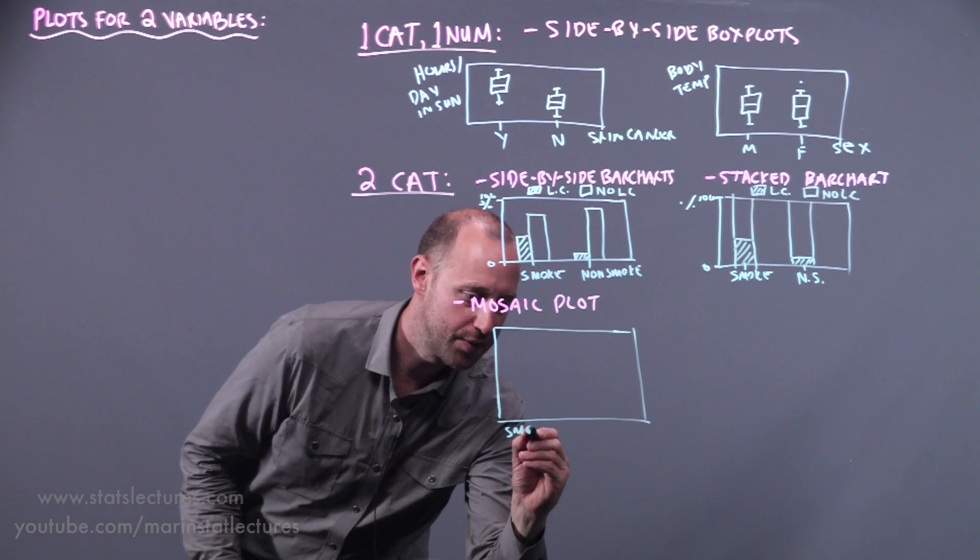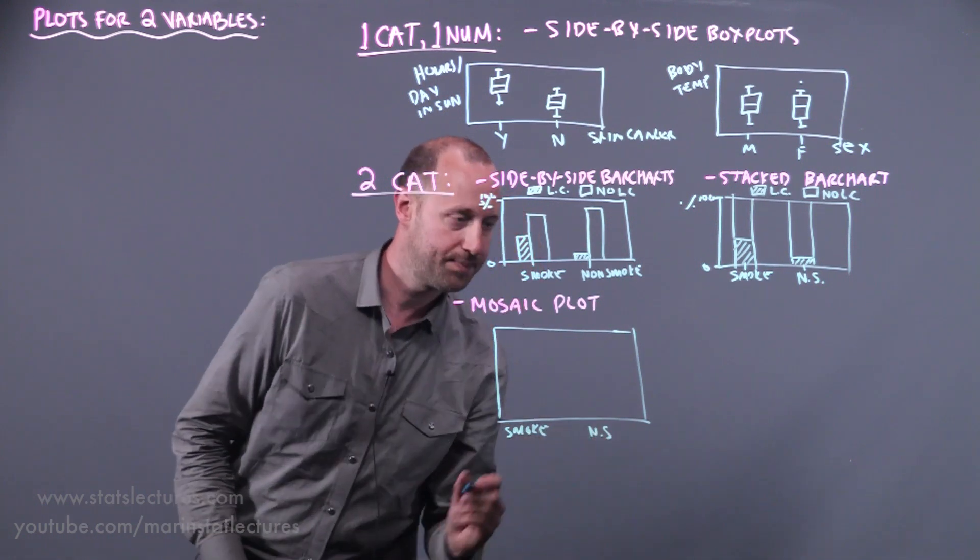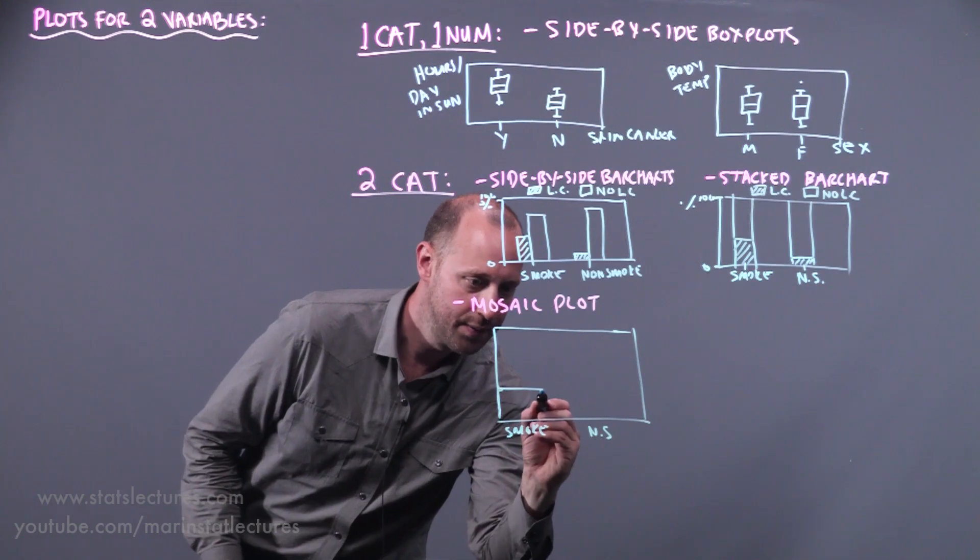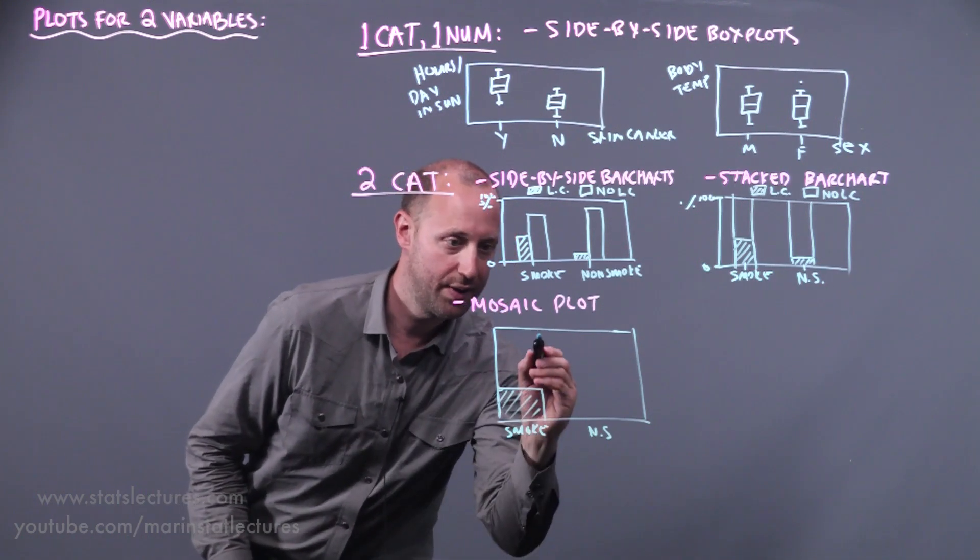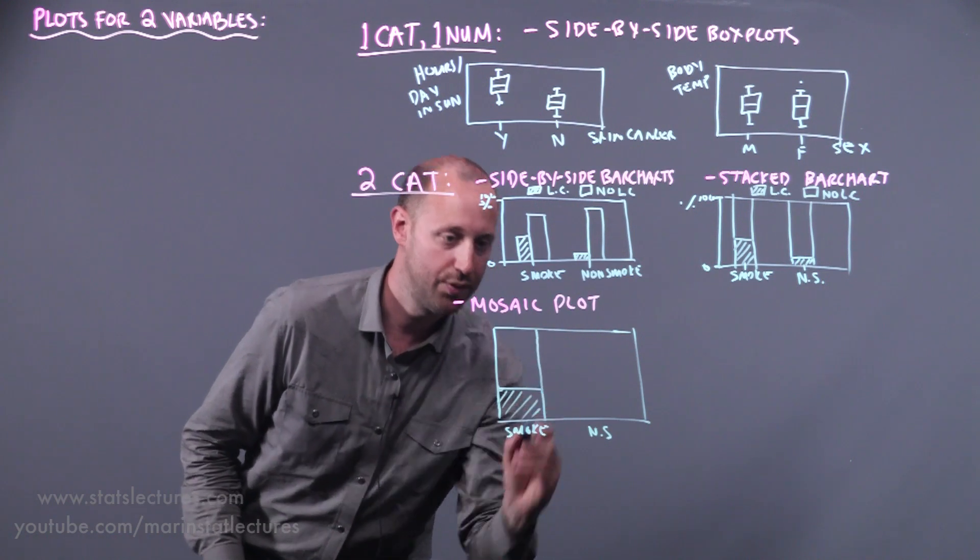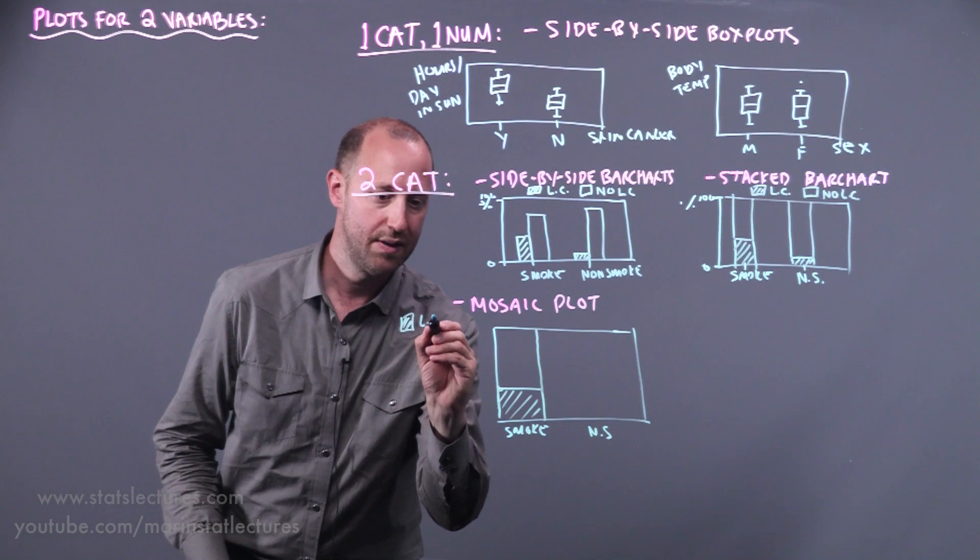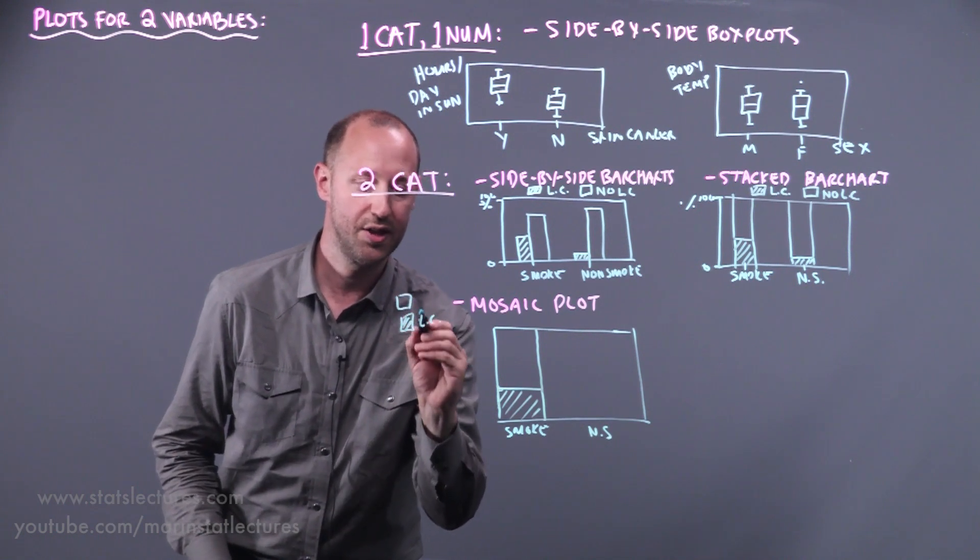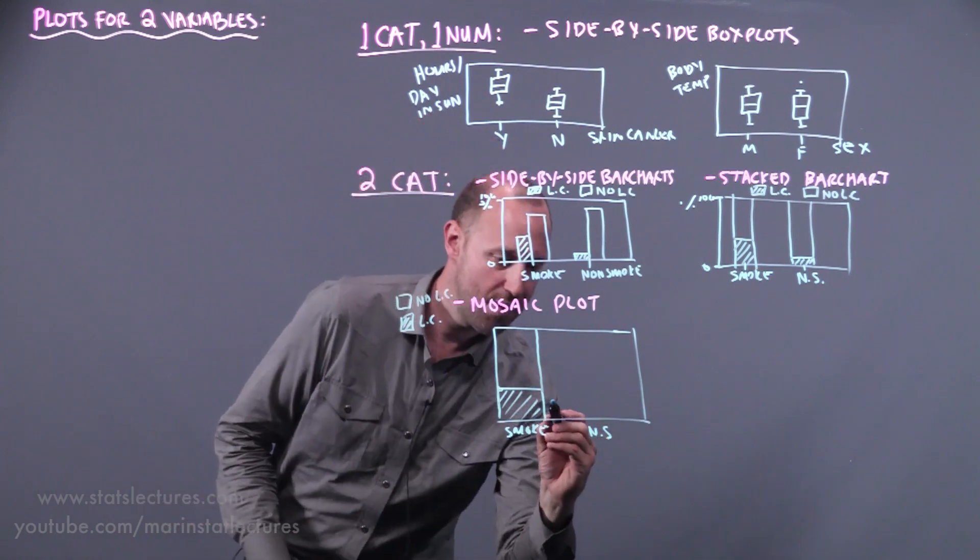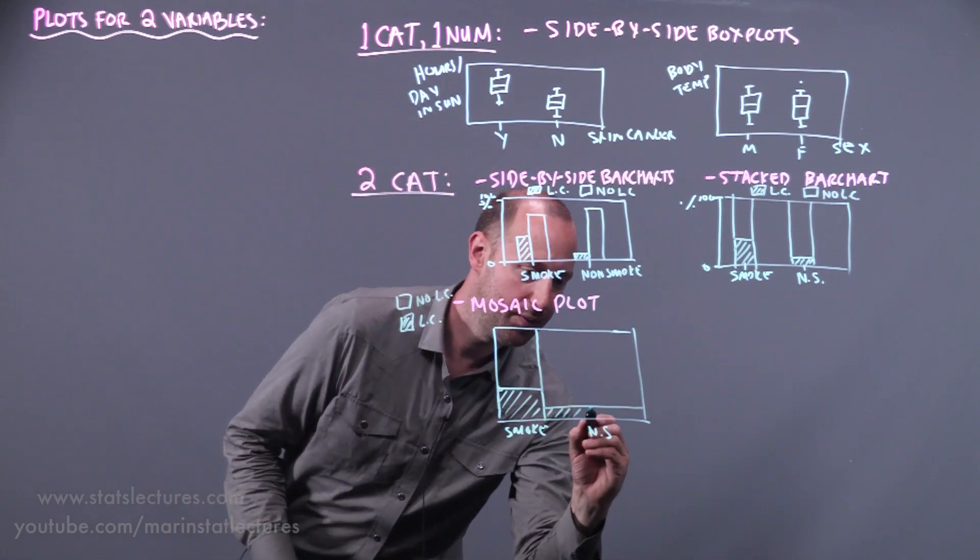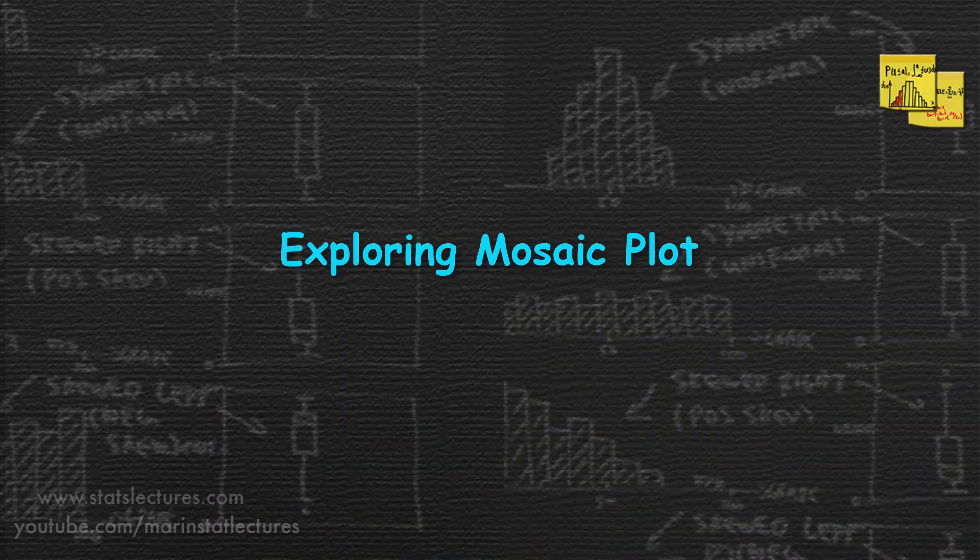And remember in our example, we said there's roughly, for the smokers, one-third getting lung cancer, two-thirds not. So let me label that again over here. These are the group with lung cancer, and the unshaded is the group without lung cancer. And for the non-smokers, we saw about 10% getting lung cancer, 90% not. So let's talk about this plot for a moment.